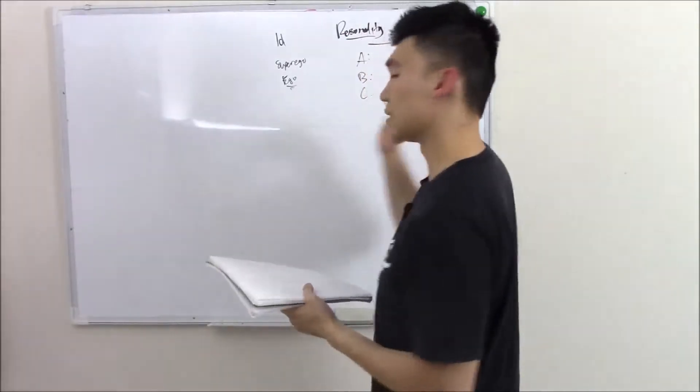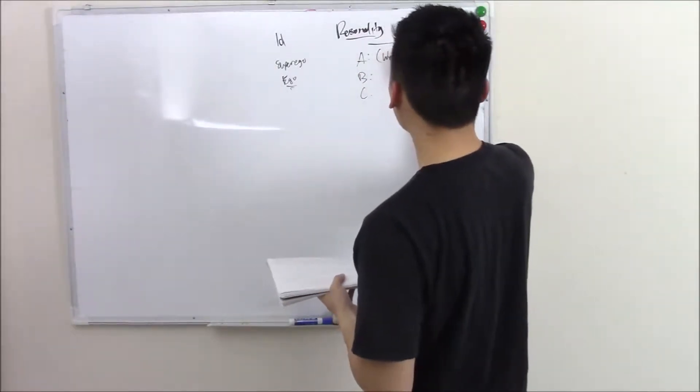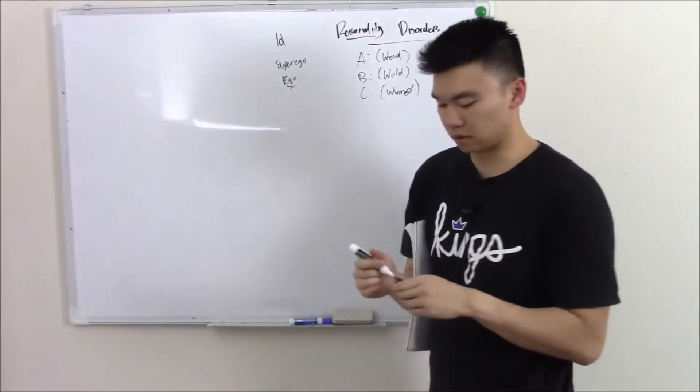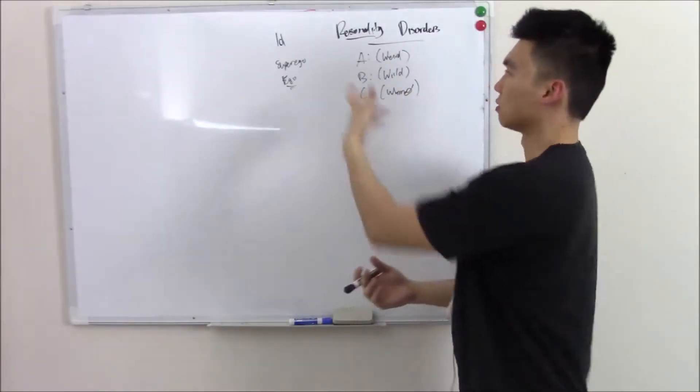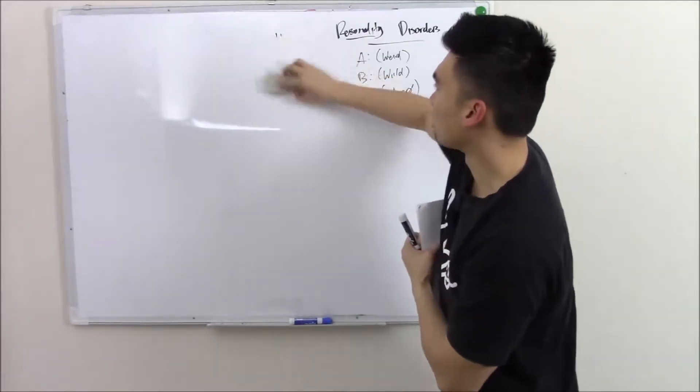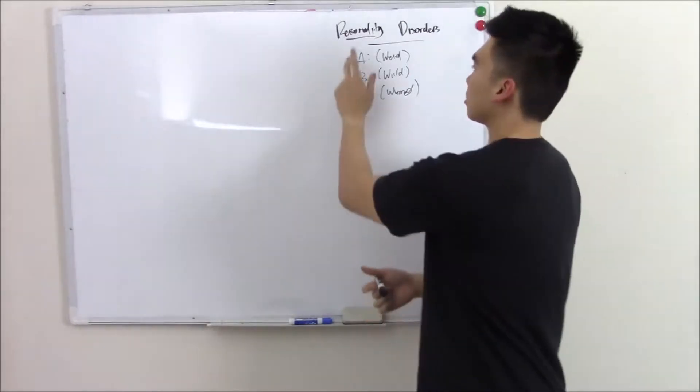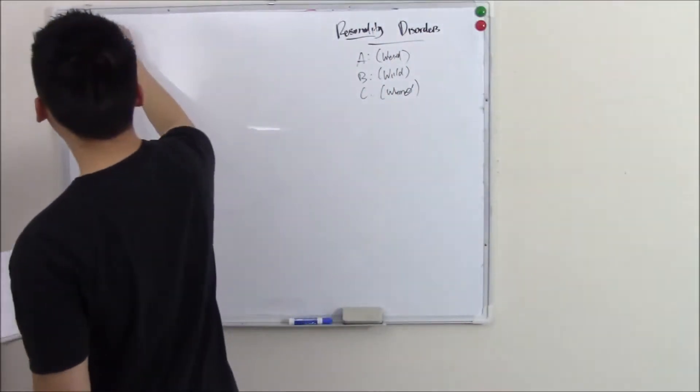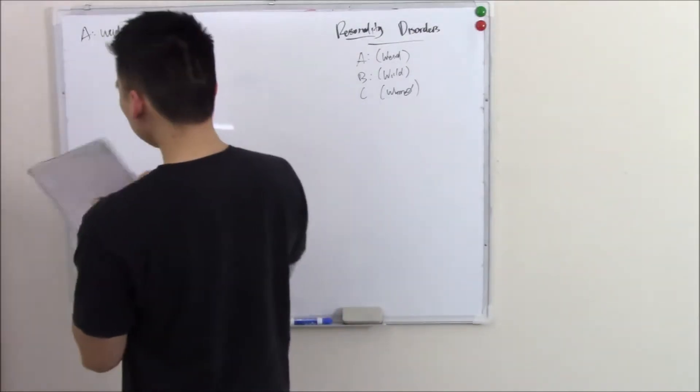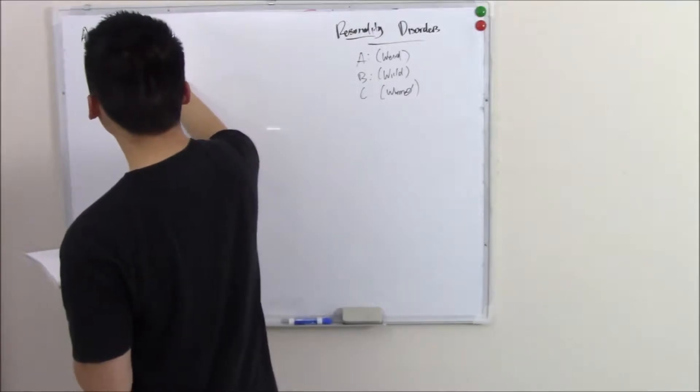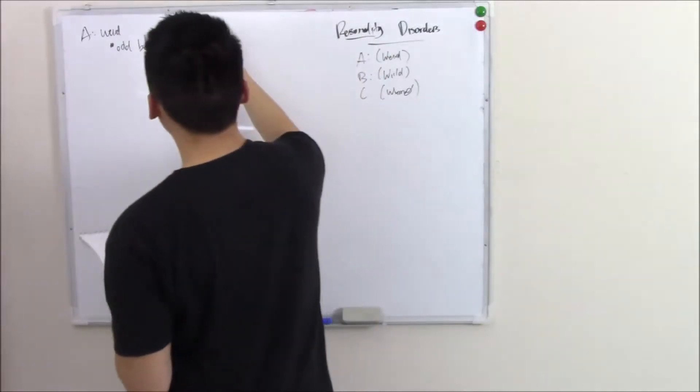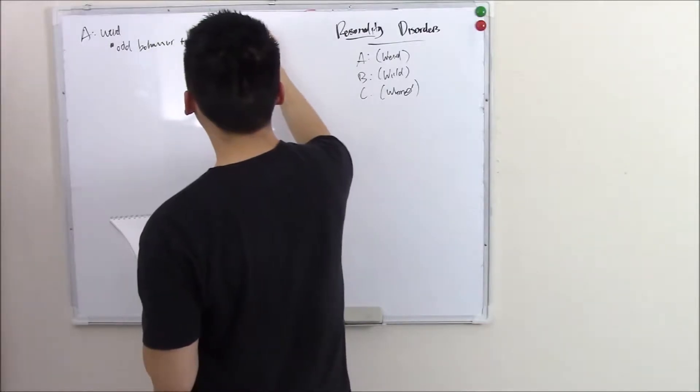An easy way to remember is cluster A is known as the weird category, B is known as wild, and C is known as worried. These are not actual medical terms but just an easy way to remember. We'll start with cluster A, the weird personality disorder. It's marked by odd behavior and troubles with developing social relationships.